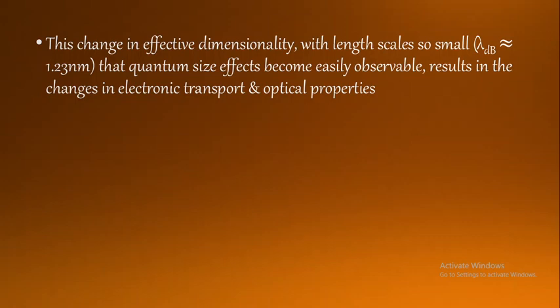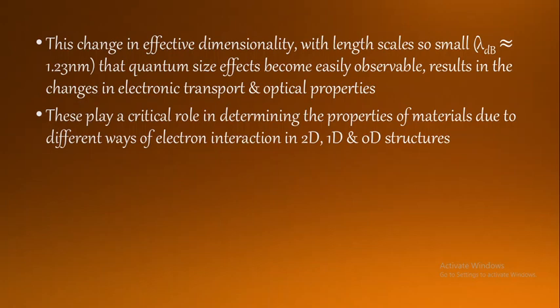As we go on reducing the size, we are going to the quantum size or nanoscale. At nanoscale we can observe a drastic and rapid change with respect to properties - it may be electronic transport properties or optical properties. Due to this reduction from bulk semiconductor to low dimensional semiconductor, we can observe a pronounced change in the properties. These low dimensional semiconductor structures play a critical role in determining the properties of materials due to different ways of electron interaction in two-dimensional, one-dimensional, or zero-dimensional structures.